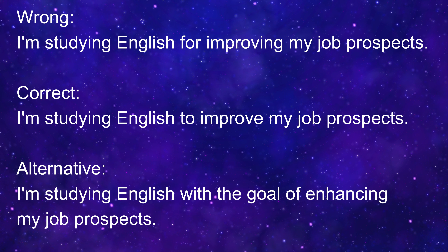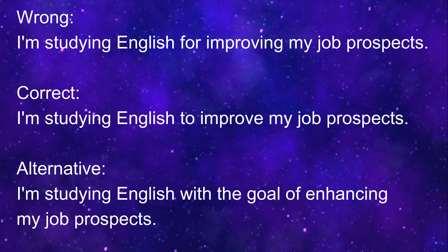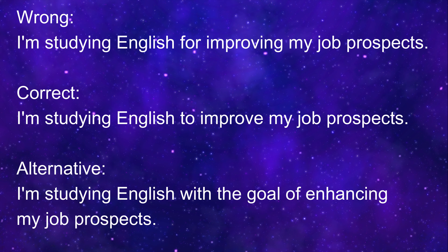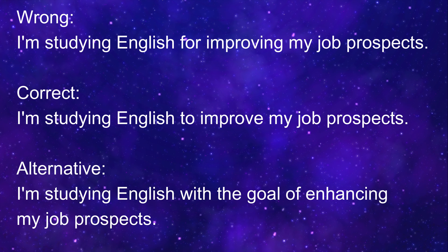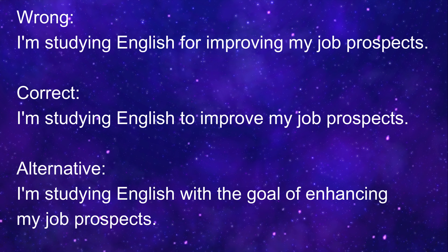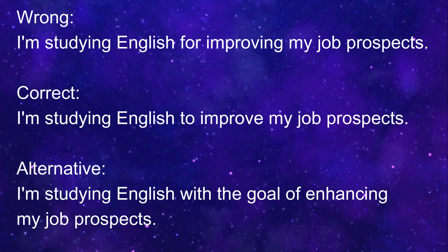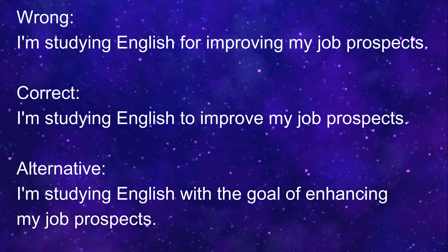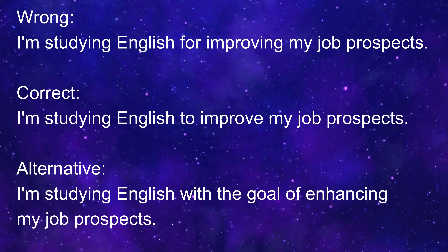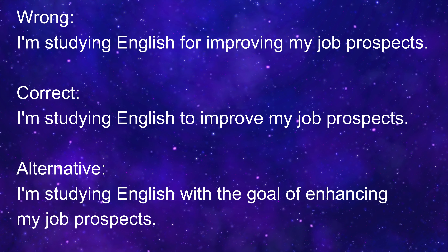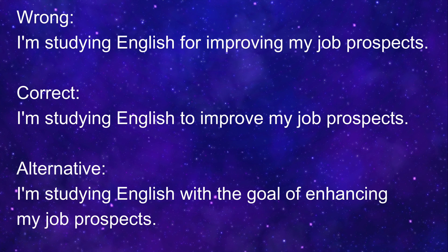I'm studying English for improving my job prospects. Where is the mistake? The correct way should be: I'm studying English to improve my job prospects. The purpose is to improve my job prospects. Simply put, we do not say 'for' plus verb-ing. We only say 'to' plus verb: to improve my job prospects. As an alternative, you can also say: I'm studying English with the goal of enhancing my job prospects.